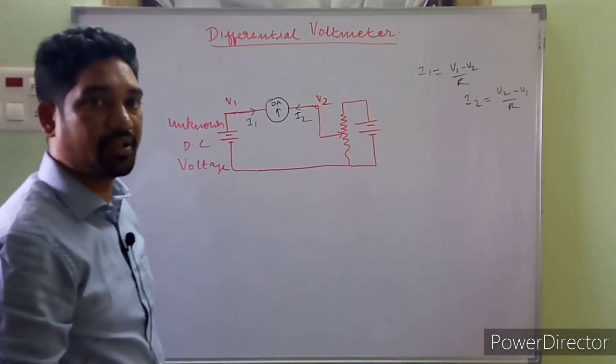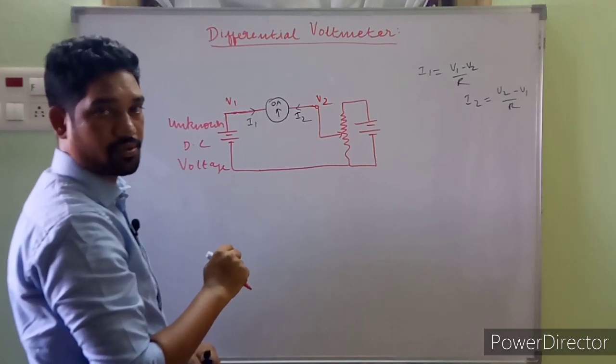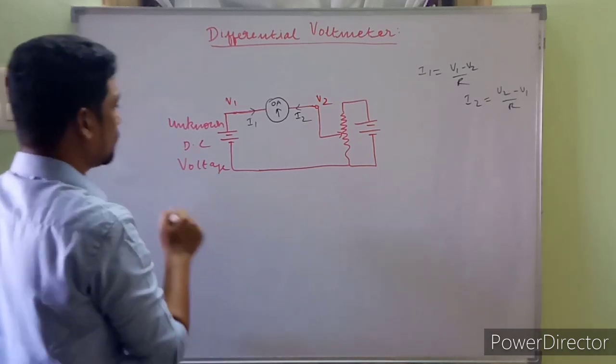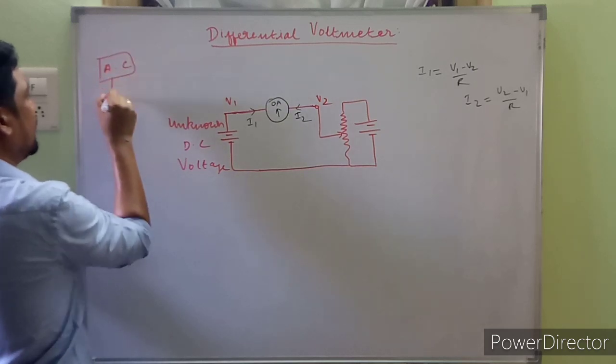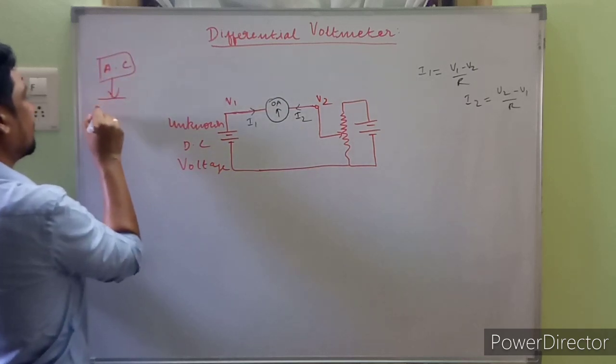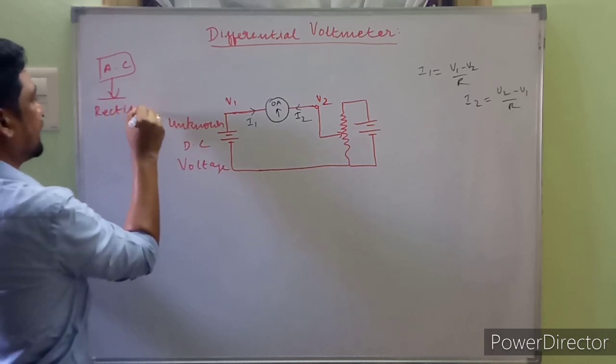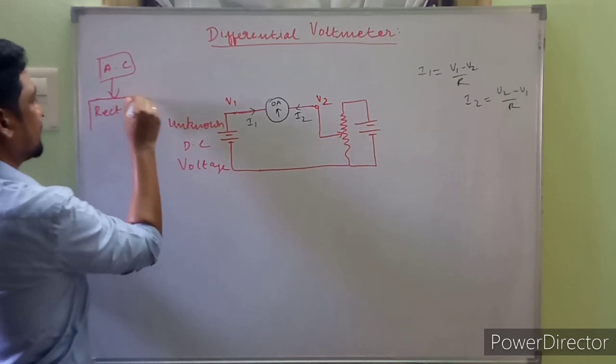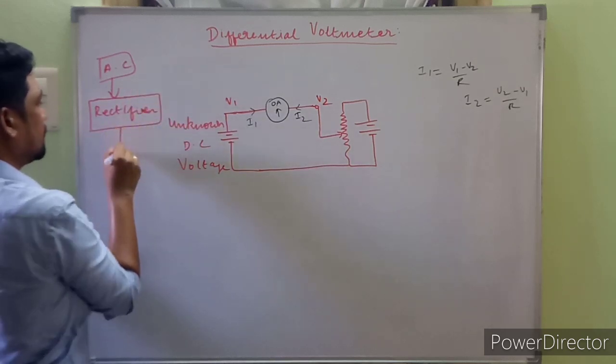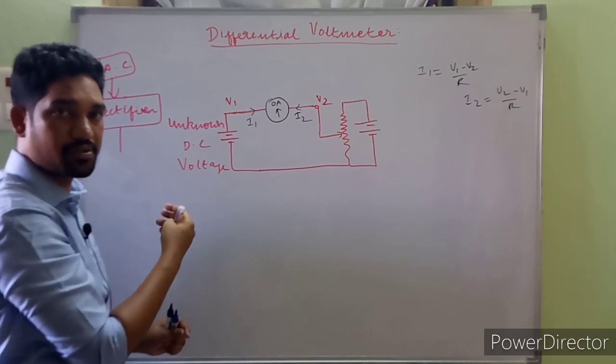Right. On the other hand, what to do for measuring unknown AC voltages? The unknown AC voltage is fed to a rectifier circuit. And from the rectifier circuit after filtering, finally, the output of the rectifier circuit is DC.